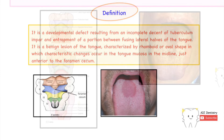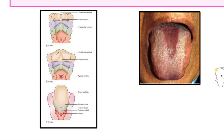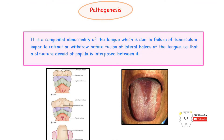Moving on to pathogenesis: two pictures illustrate the development of the tongue. The first shows development at four weeks — two lateral lingual swellings with the tubercular impar interposed between them. The second image at five weeks shows gradual increase in size of the lateral lingual swellings as they begin to merge. If the interposed tubercular impar does not retract or withdraw itself at the correct point of time, a developmental anomaly occurs in the tongue.